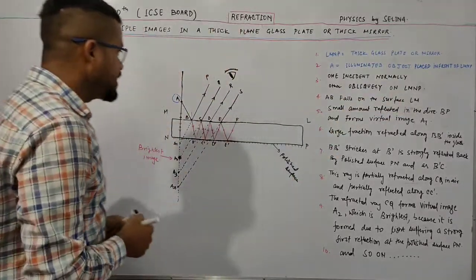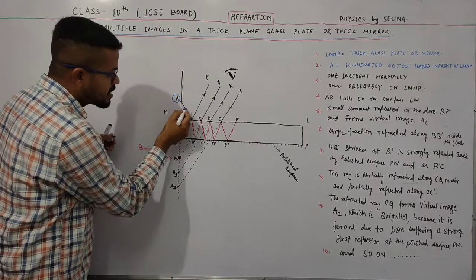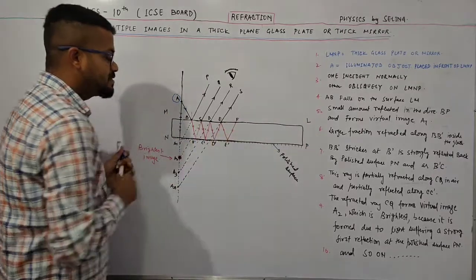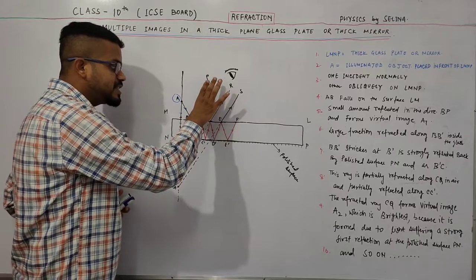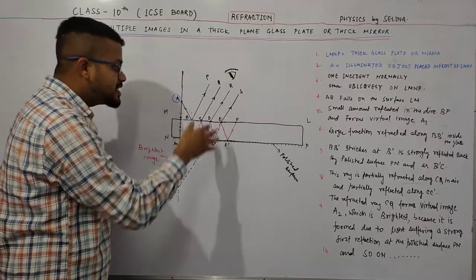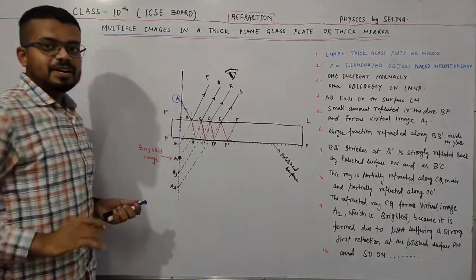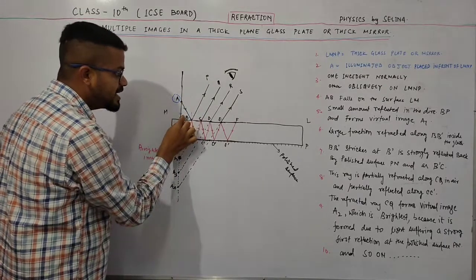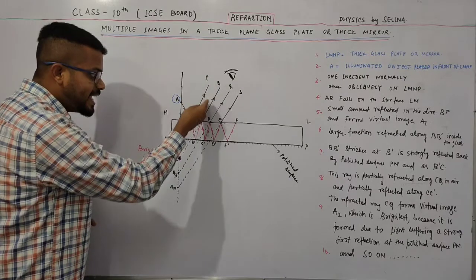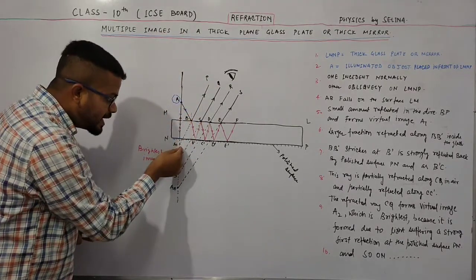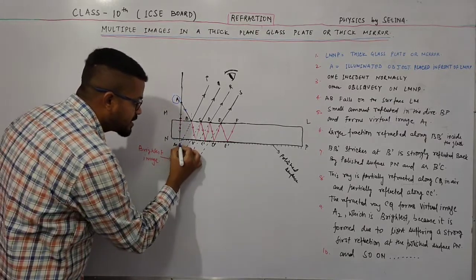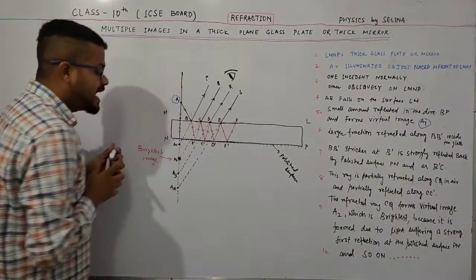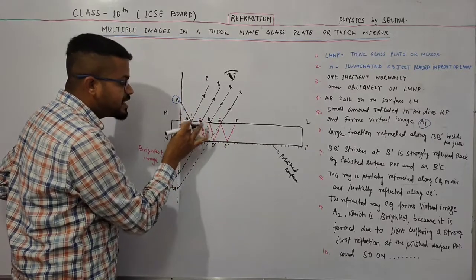This ray AB falls on the surface LM. When this light ray is incident on this surface, a small fraction of light gets reflected and a larger fraction gets refracted. The small amount of light which is reflected goes in the direction BP. When I extend this BP line after reflection, it meets the normal line at point A1 and forms a virtual image A1.